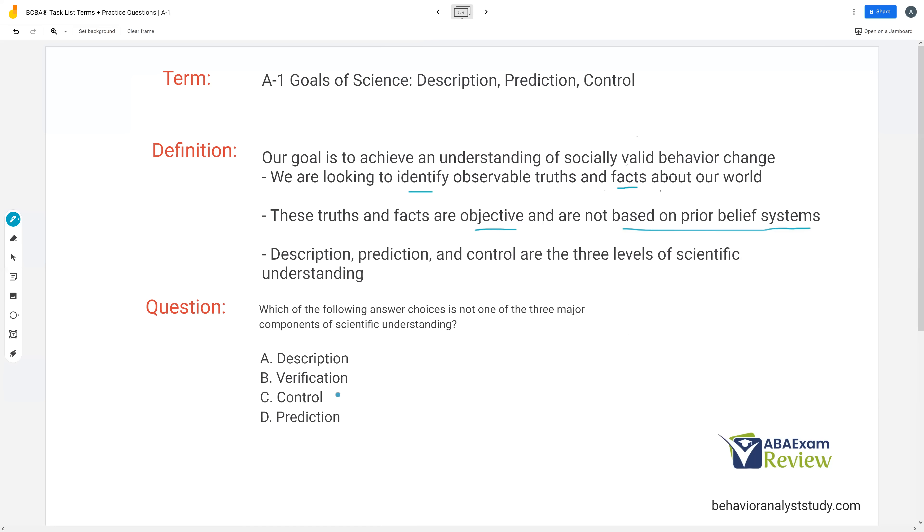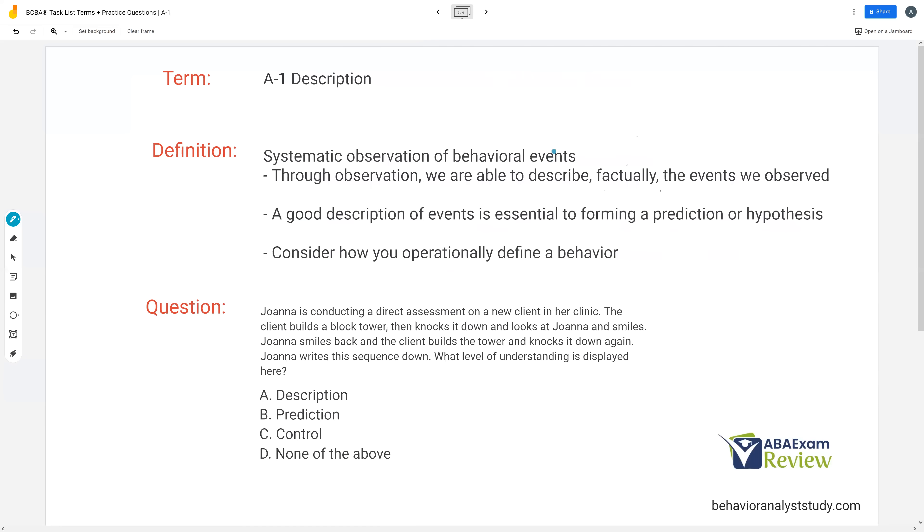So we know description, control, and prediction are our three major components of scientific understanding. Which one is not? Well, it's going to be B, verification.